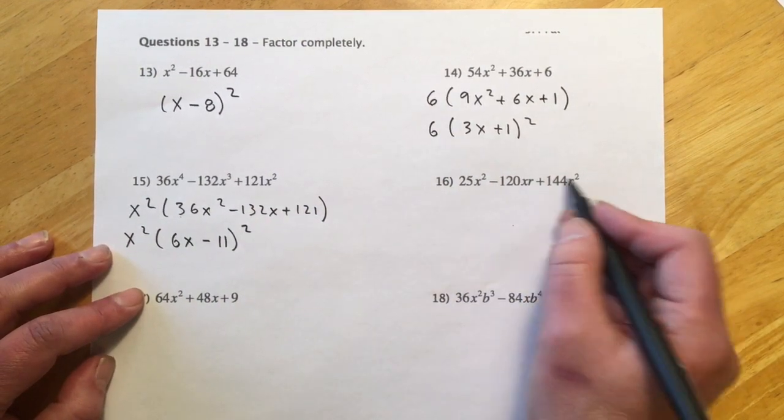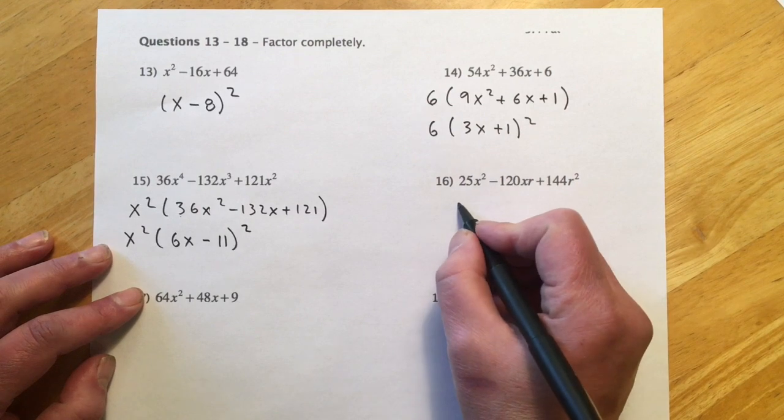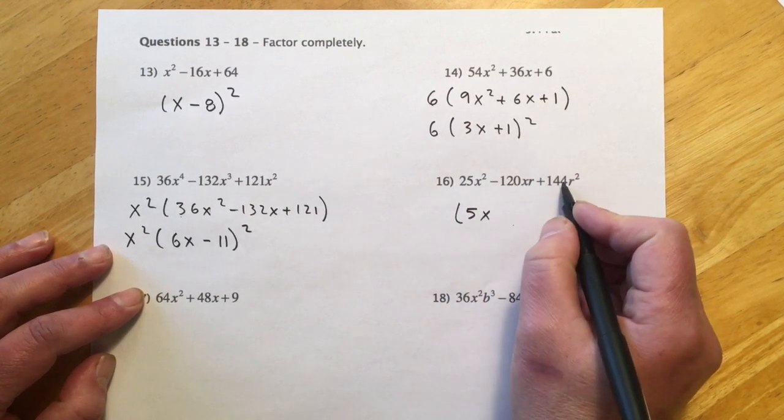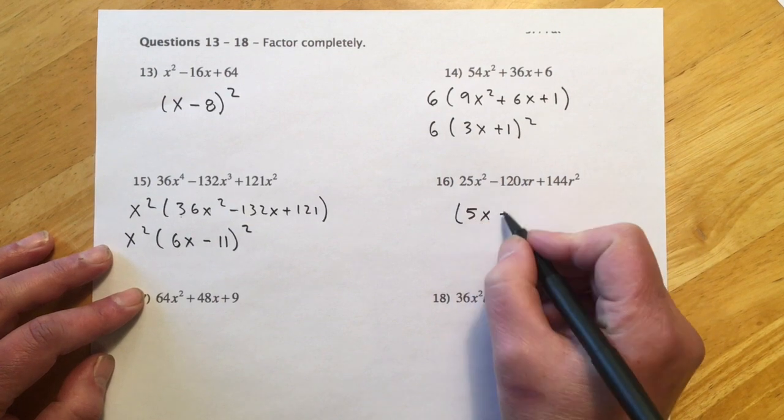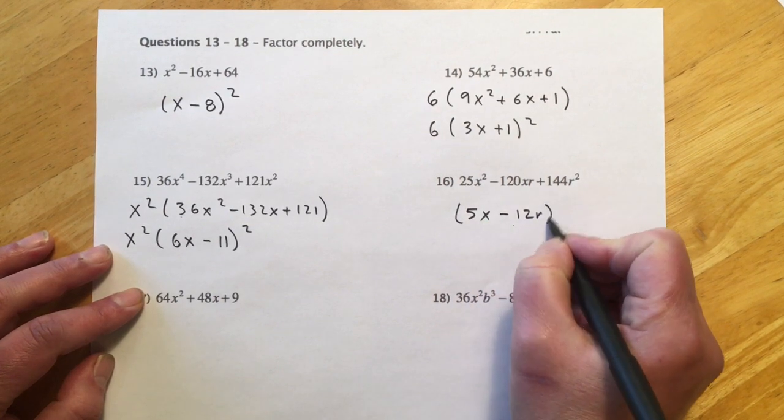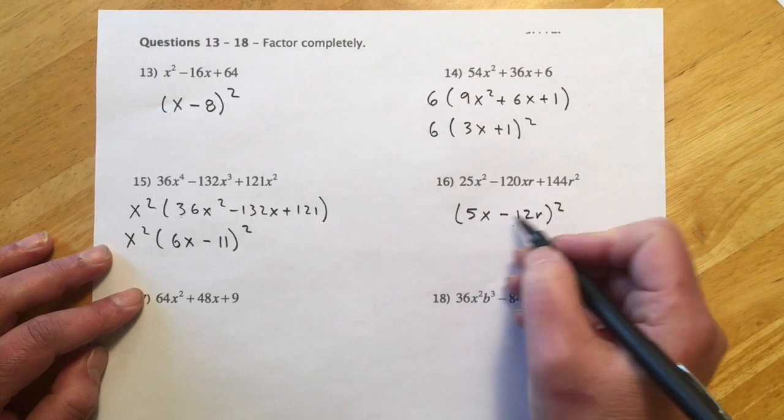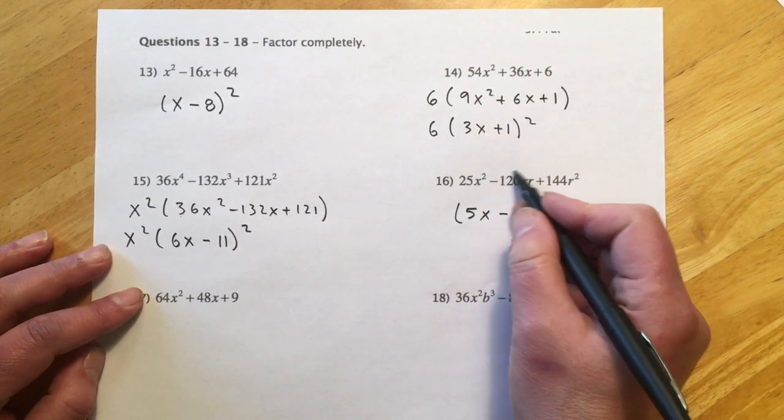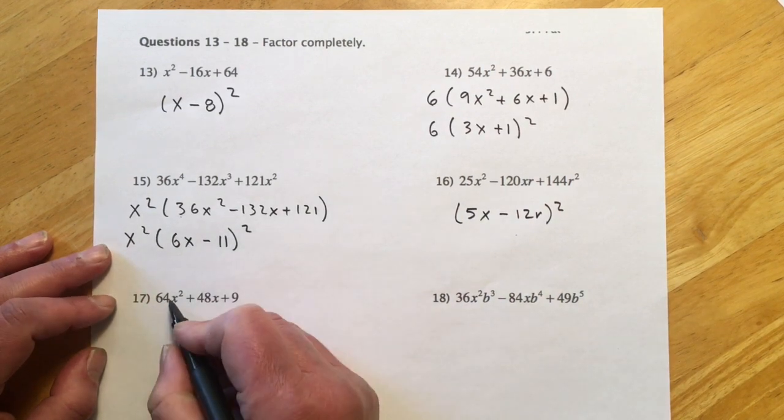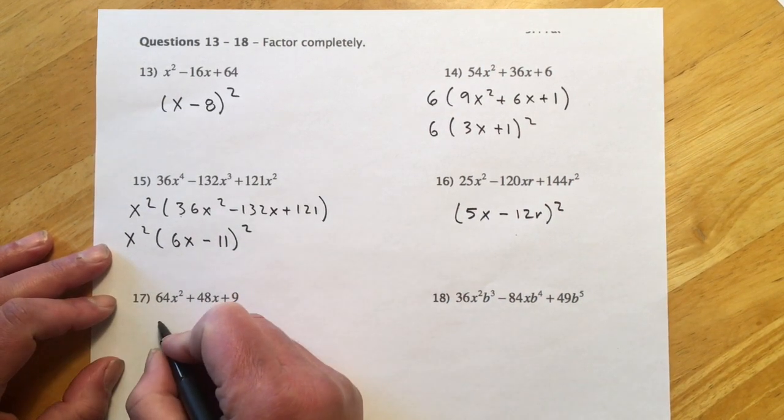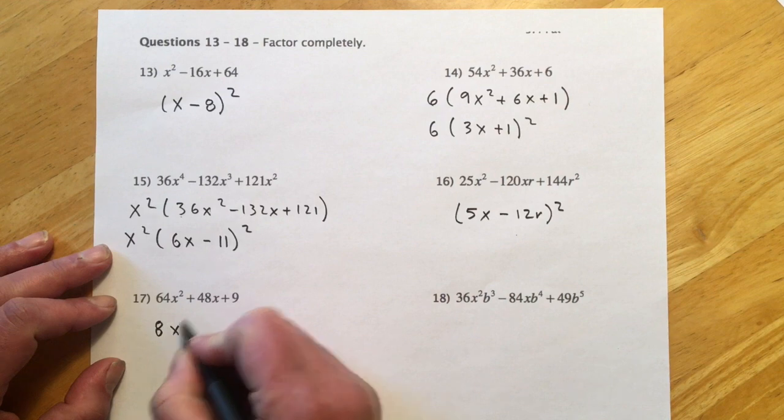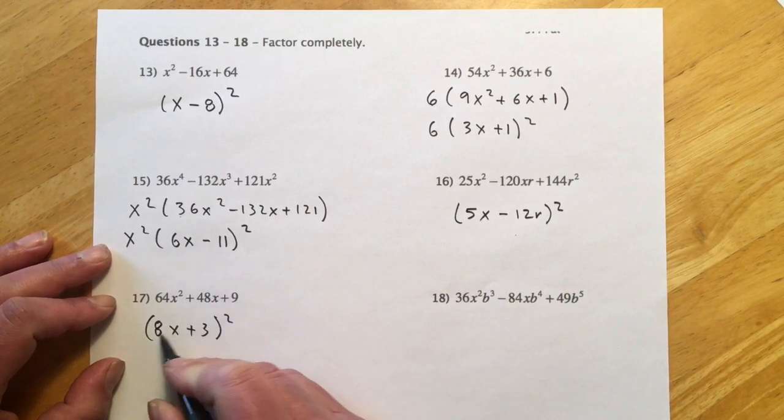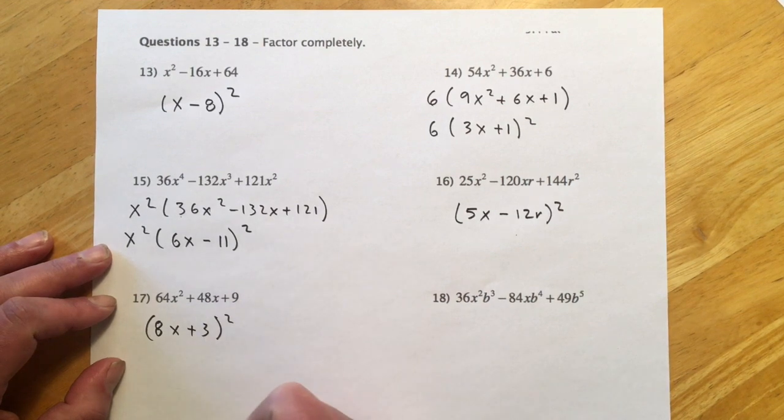Here, extra letter but no GCFs, so pretty easy. 5x would be 25x², 144 is 12, so this is a minus, so (5x - 12r)² quantity squared. 5 times 12 would be 60xr, and then doubled would make the 120. This one, pretty straightforward, so 64 makes 8x, 9 makes 3. Square it, that'll be 24 doubled, and there's our 48.